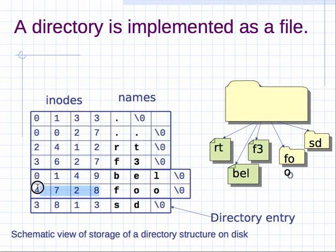To tell whether an entry is a file or a directory, you have to go to the inode and get information using stat or something like that. You go to the inode table entry and you will see whether this particular thing is a file or a directory. Just looking at the name you can't really tell. This is a schematic view of storage in directory structures — it's not really stored like this, it's actually stored using a more complicated data structure.